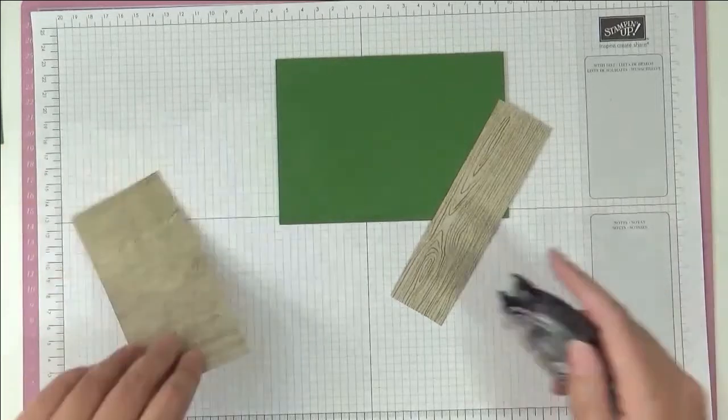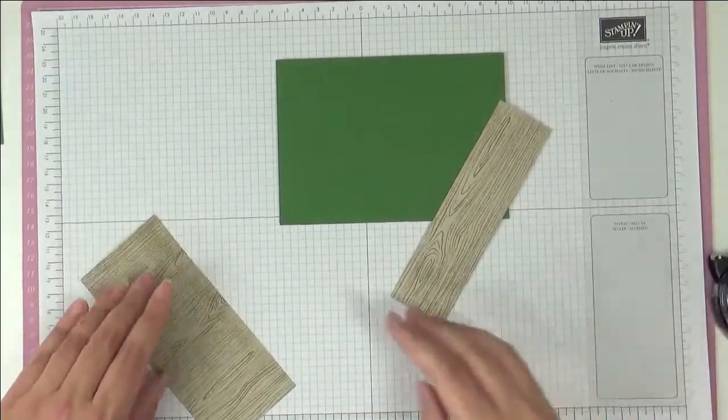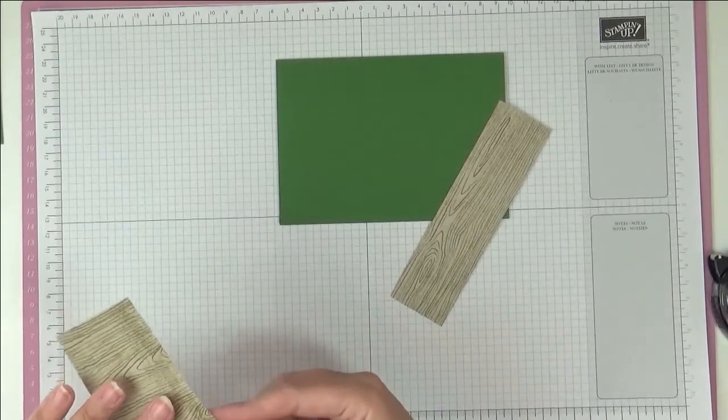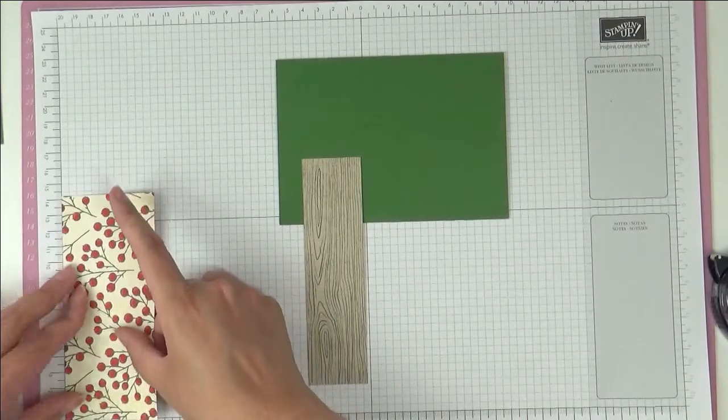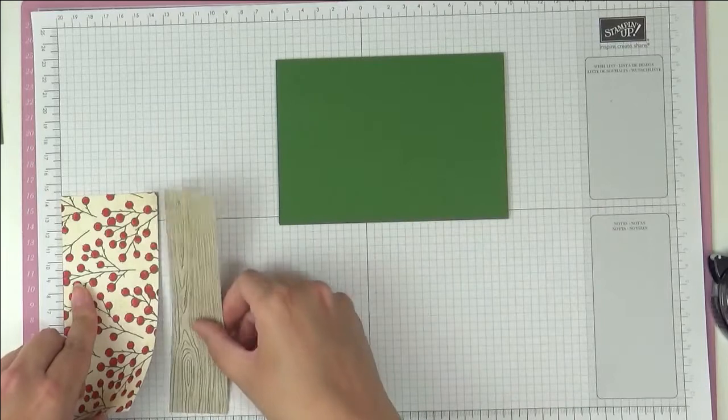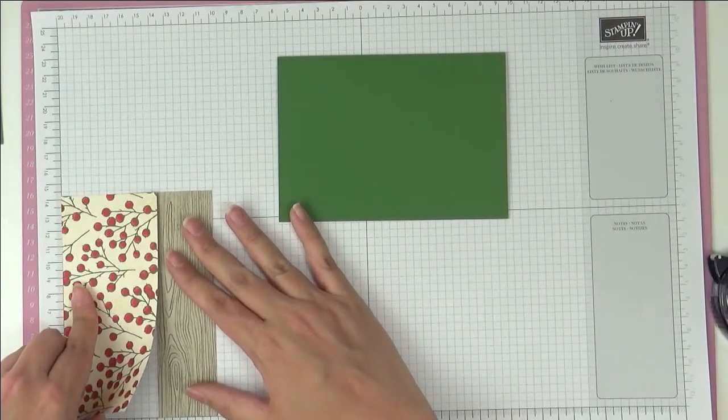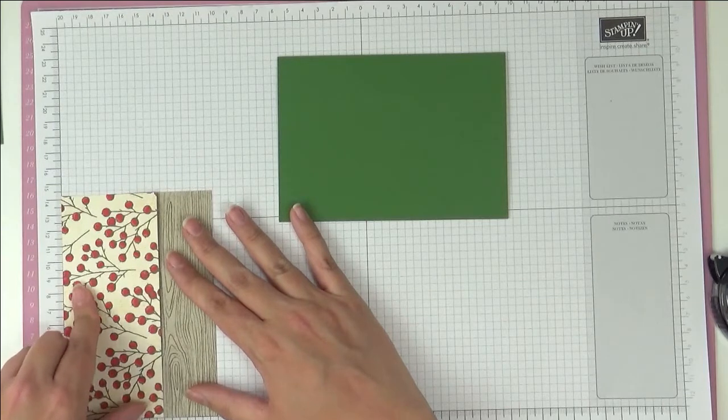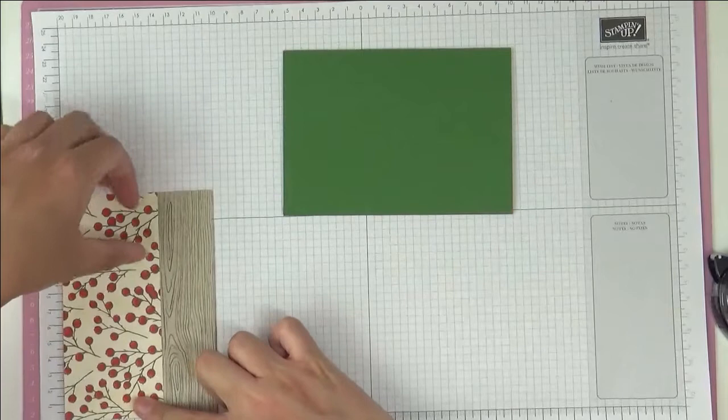So all I'm going to do is put a little bit of Snail on the back of one side and then put this down. I'm using my grid paper here so I can get everything nicely lined up. This is at the 10 centimeter mark, and then I can just press down here on the two together.